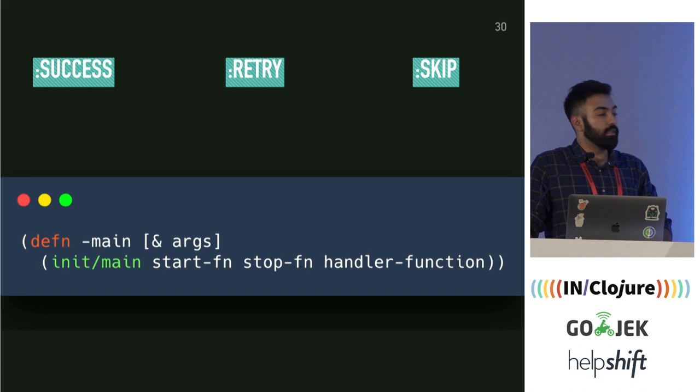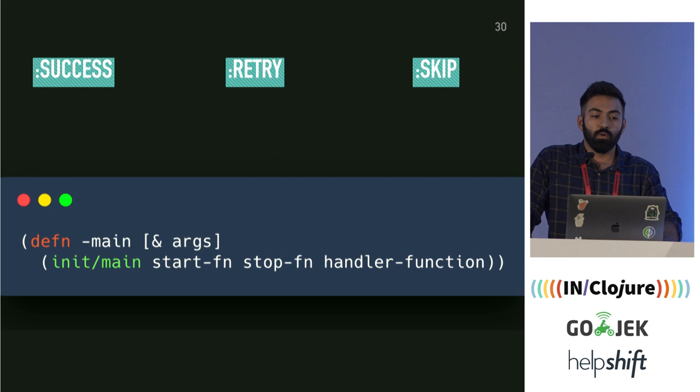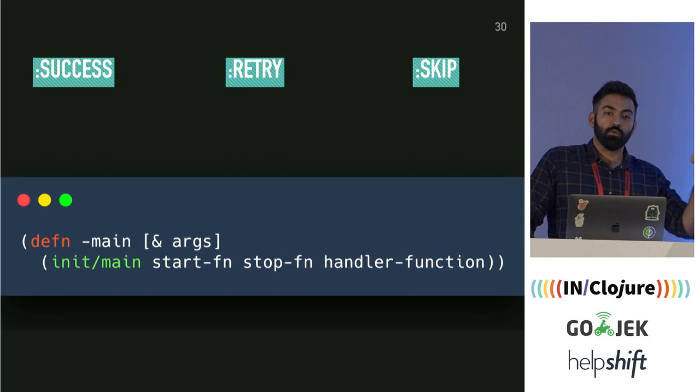How did the interface change? It remains mostly the same, but Ziggurat now expects three keywords: success, retry, or skip. When you return success, Ziggurat just moves on. When you return retry, it puts the message into a RabbitMQ queue. When you return skip, it logs it and skips the message, moving on to the next one.